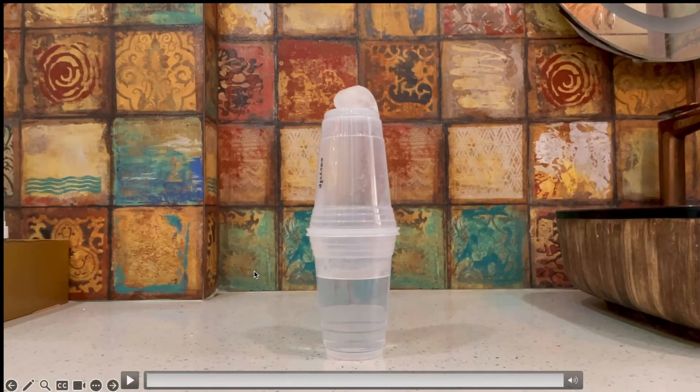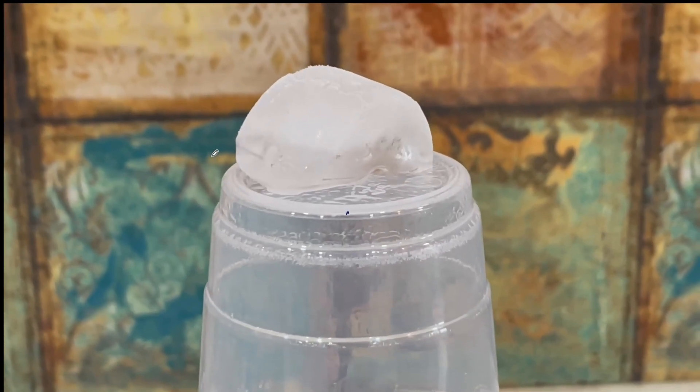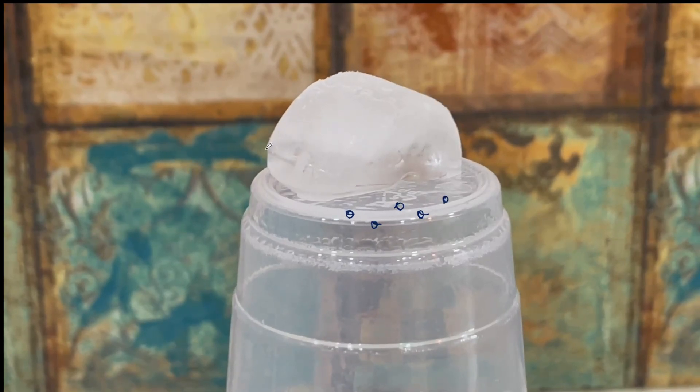Now as we leave it for some time, we will start to notice small tiny water droplets that start to accumulate on the upper cup. And eventually these tiny droplets will start to join together, eventually forming bigger droplets that trickle down at the base of the cup.